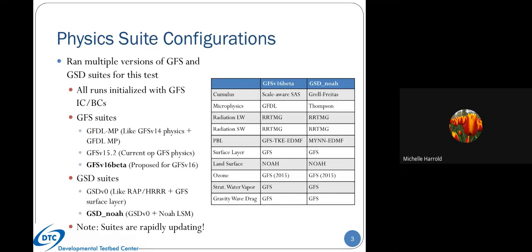In the public release, this will be shifting towards what's called the RRFS, or Rapid Refresh Forecast System, but when we ran our specific configurations we referred to them as GSD-based suites. I also want to note that the suites are rapidly updating—we ran these runs several months ago, so there have been a lot of both technical and scientific changes. We'll look to rerun our cases with the most up-to-date code in the coming weeks.